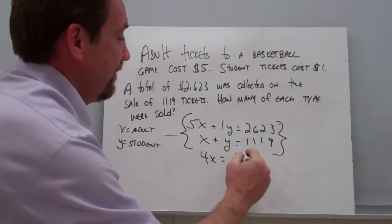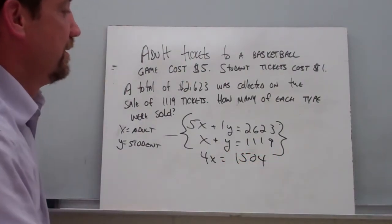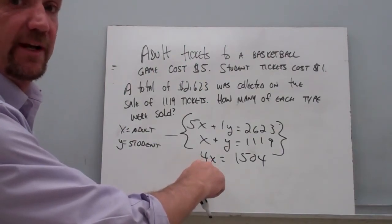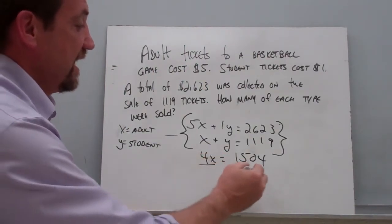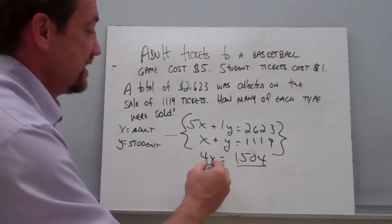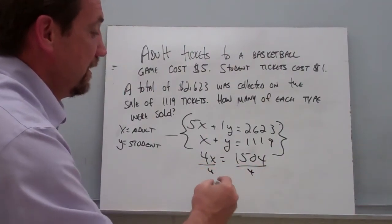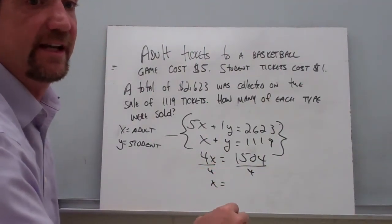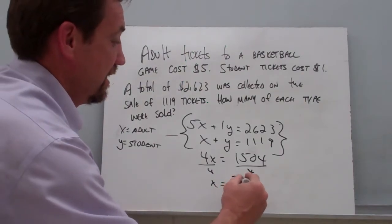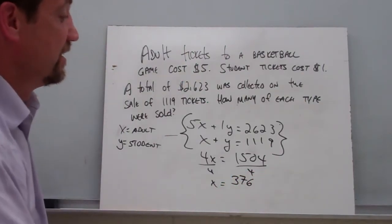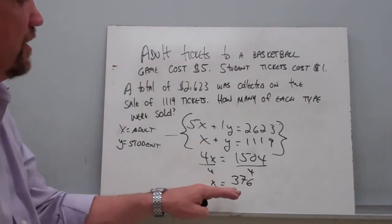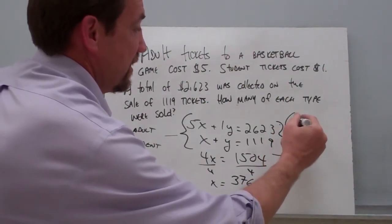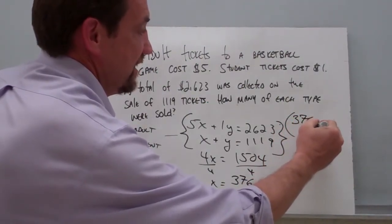1,504. Now we want to solve for X — get that X by itself. So we're going to divide both sides by 4. When we do that, we're left with X equals 376. So now we know that the X value is going to be 376.